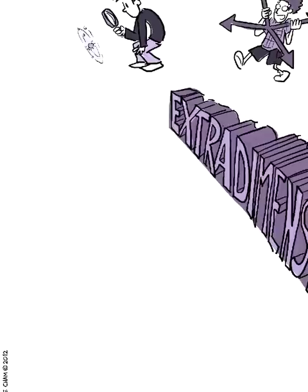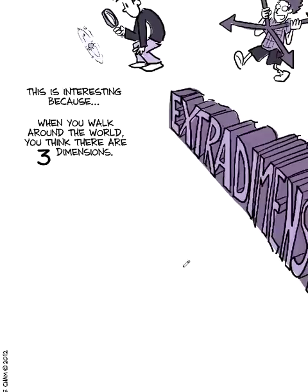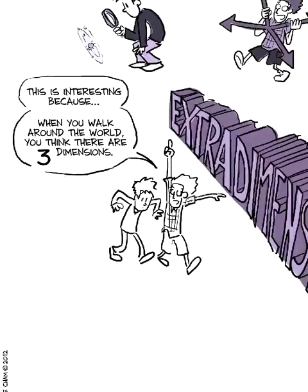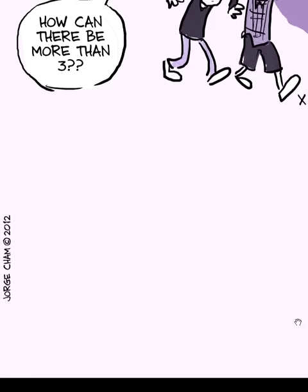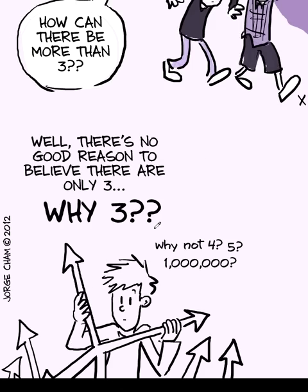And this is a really interesting topic because, obviously, when you just walk around the world, you think there are three dimensions. It's obvious. There's up, there's left, and there's forward and backwards. So X, Y, Z, three dimensions. How could there be more than three dimensions? We have no good reason for believing that there are just three. Why three?